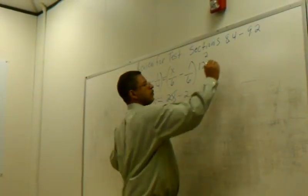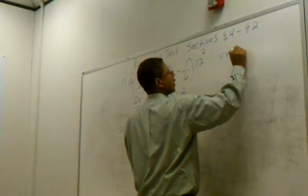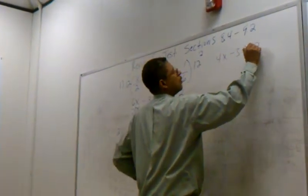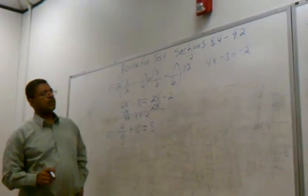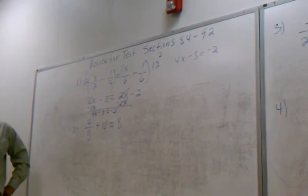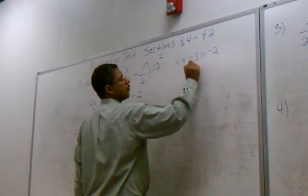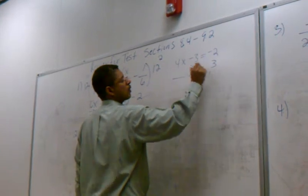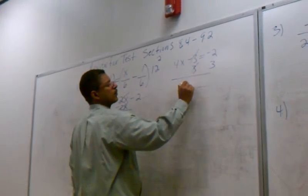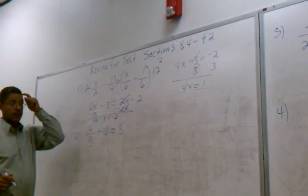Let's go ahead and finish the problem. So we got four X minus three equals negative two. So what do I do next to solve this? Add three. Add three to both sides. Cancel your threes so you get four X equals one. Then I'm going to divide by what? Four. And you're done.